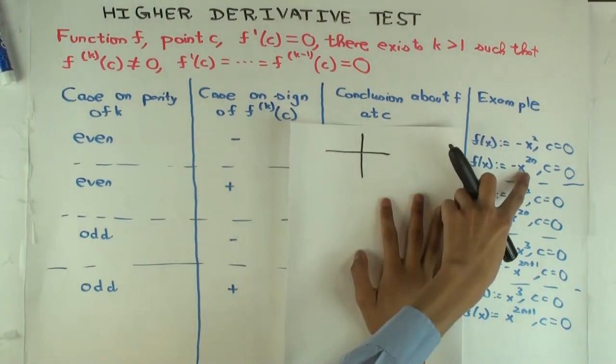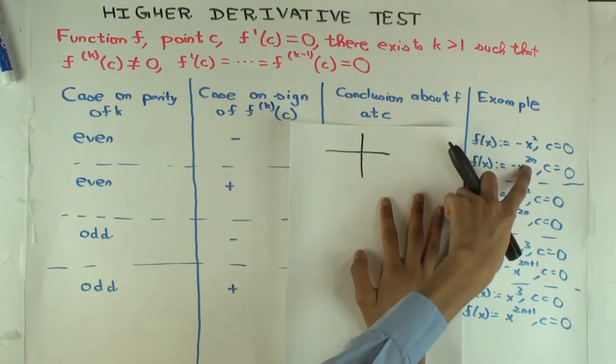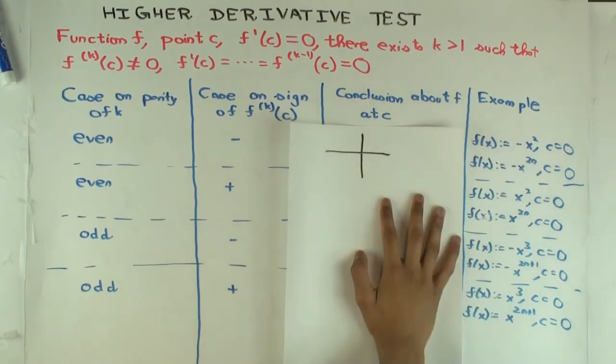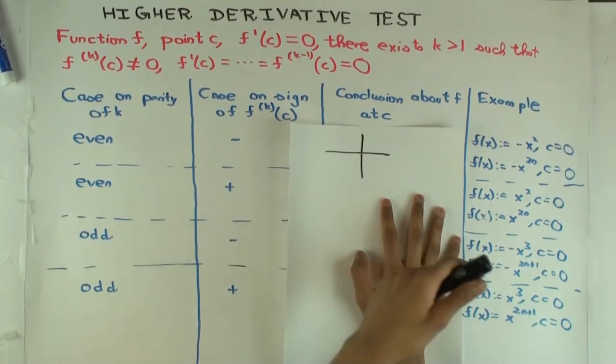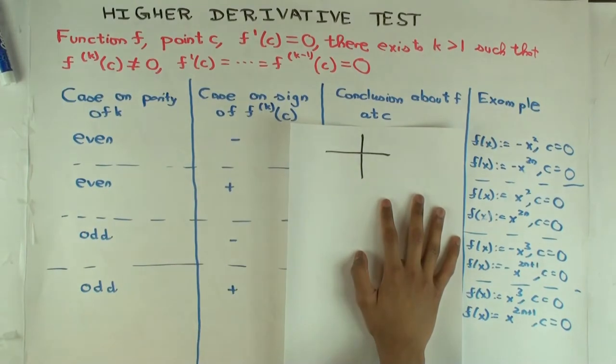You can similarly take negative x to the 4 or negative x to the 6, negative x to any positive even power. For example, if you take negative x to the 4, how many times do you need to differentiate it to get a non-zero valued thing at zero? Four times. And what's that value? Negative 24. So you get even and negative.